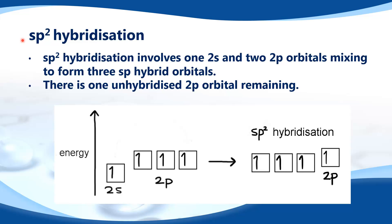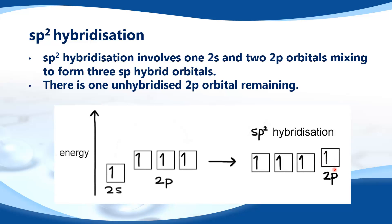SP2 hybridization involves one 2s and two 2p orbitals mixing to form 3 sp2 hybrid orbitals, with one unhybridized 2p orbital remaining. Again starting from the excited state of carbon and applying sp2 hybridization, we have 3 sp2 hybrid orbitals and one unhybridized 2p orbital remaining.